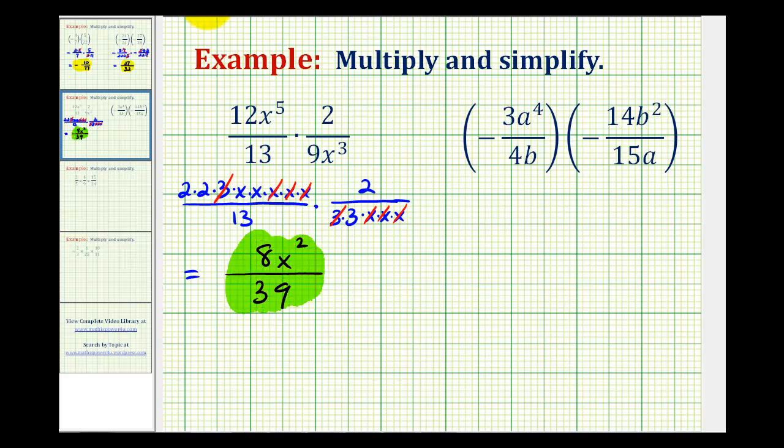Let's take a look at our second example. Notice here we have a negative times a negative, so this product must be positive. Let's write everything in prime factored form and expand our variables.